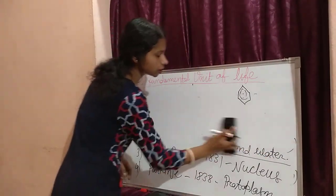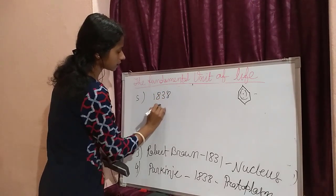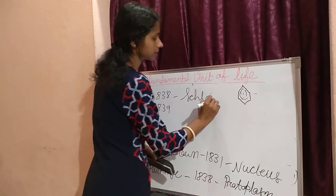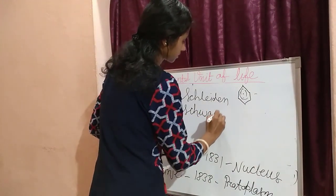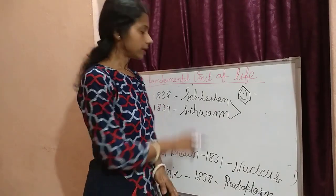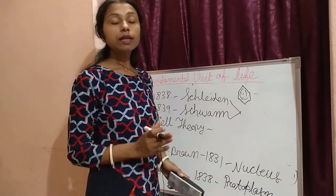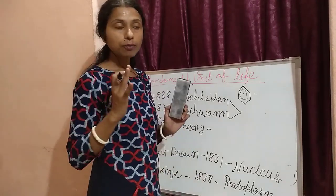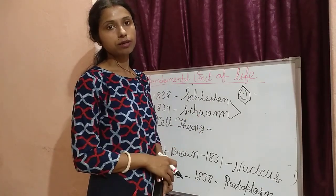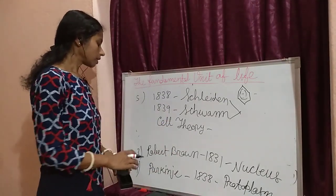Next comes Cell Theory. Scientists Schleiden and Schwann, in the years 1838 and 1839, ultimately came with the Cell Theory. Cell Theory means: cell is the basic unit of life — for plants also, for animals also. Cells form all the body structure, whether it is unicellular or multicellular. Everywhere, cells form the body. This idea was given by Schleiden and Schwann in 1838 and 1839.